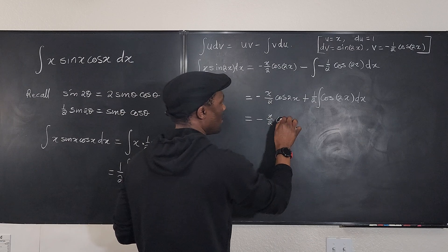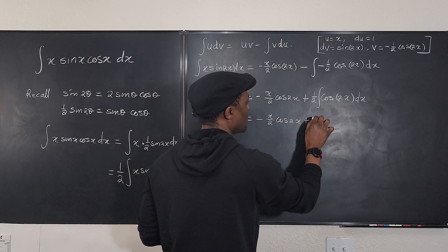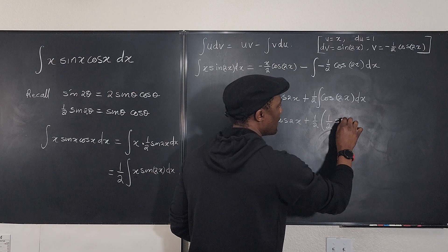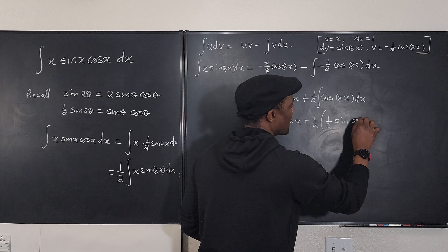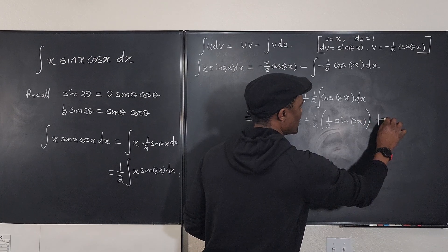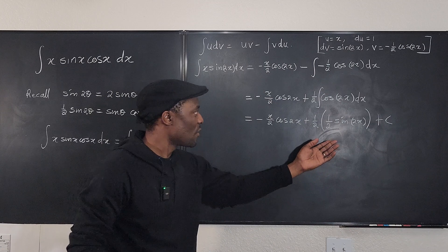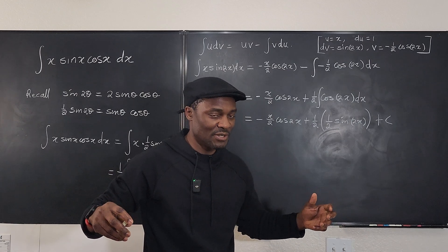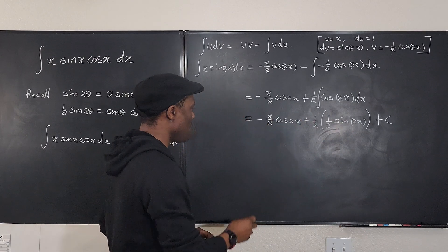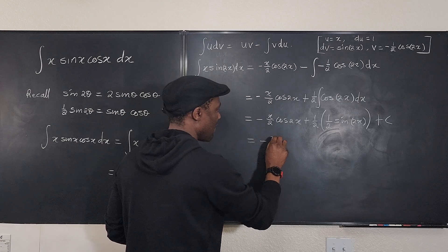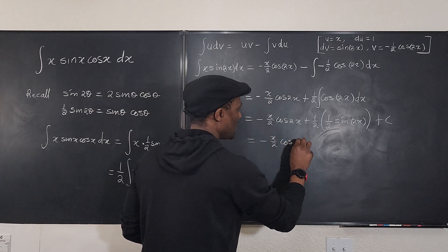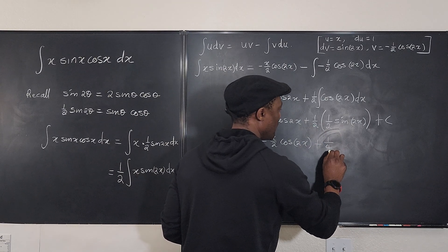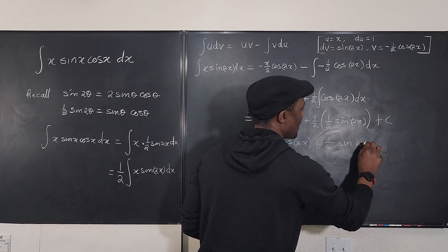We know how to integrate cos(2x): the integral of cosine gives sine (not negative sine like in differentiation), and we divide by the inner coefficient 2. So the result is −x/2 · cos(2x) + (1/2)·(1/2)·sin(2x) + C, which simplifies to −x/2 · cos(2x) + (1/4)·sin(2x) + C.